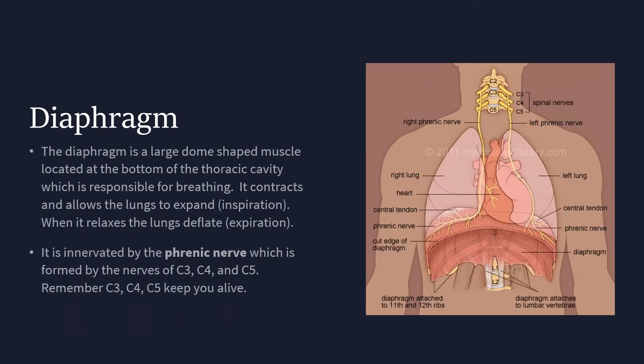The diaphragm is a large dome-shaped muscle located at the bottom of the thoracic cavity and is responsible for breathing. It contracts and allows the lungs to expand during inspiration, and when it relaxes, the lungs deflate during expiration. It's innervated by the phrenic nerve, which is formed by the nerve roots of C3, C4, and C5. Remember: C3, C4, and C5 keep you alive.